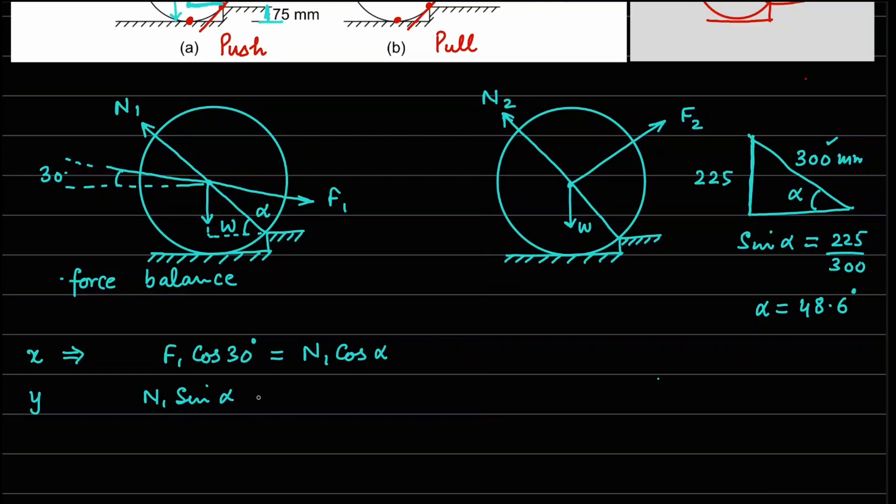Now in the second case, the angles again - this one is 30 degrees and this one right here is alpha. So we can write F2 cos 30 degrees positive has to be balanced by N2 cos alpha. And in the y direction, we notice that your N2 sin alpha is going up plus F2 sin 30 is going up, and this will be balanced by the weight W. Now you can notice one thing here: if I write the second equation so that weight is written on one side, I can do this.